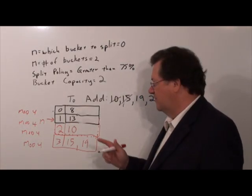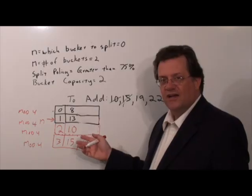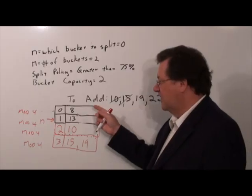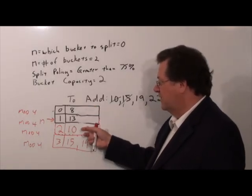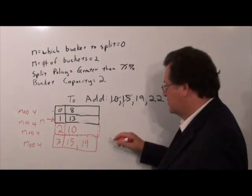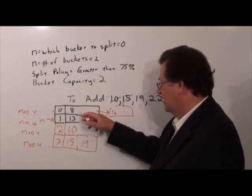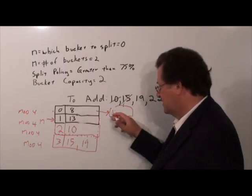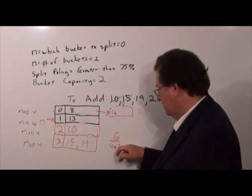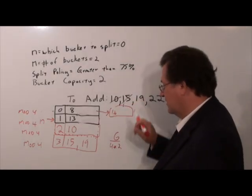Two things I want to point out. When you have an overflow bucket and you want to figure out the load factor to determine whether you need to do a split, you count up the number of items but you divide by the capacity times the number of buckets in the main directory — you do not count the overflow buckets. So if we had 6 items with 4 main slots: 6 over (4 times 2) is 6 over 8, which is 75% — that would be okay. We didn't count the overflow bucket as another slot.